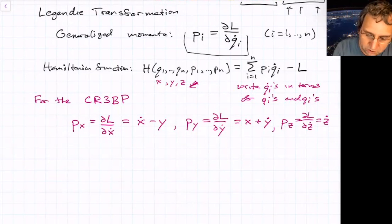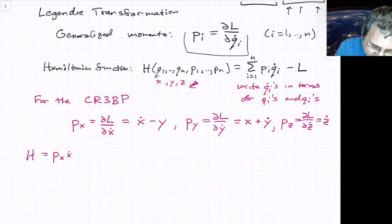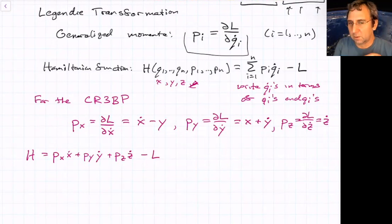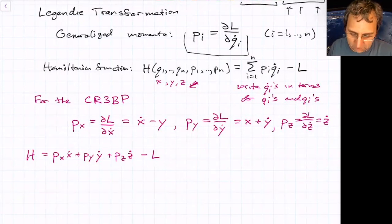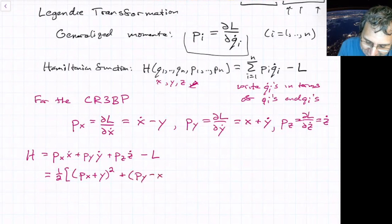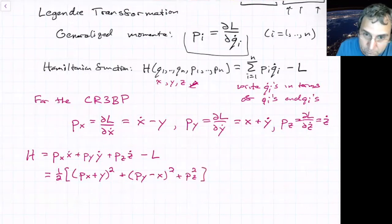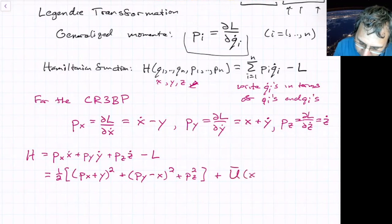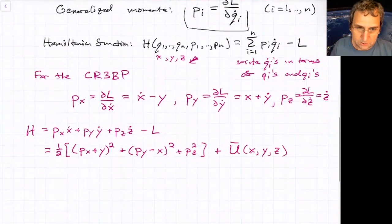So then we define the Hamiltonian function. So the Hamiltonian is going to be px, x dot plus py, y dot plus pz times z dot minus the Lagrangian. But then we write everything in terms of just x, y, and z and the momentum is px, py, pz. What you end up getting, you get one half, I'll put a square bracket, px plus y squared, that whole quantity squared, plus py minus x quantity squared plus pz squared plus the effective potential, which is a function of x, y, and z. So that's our Hamiltonian.